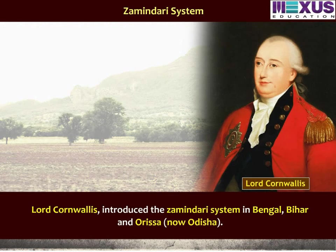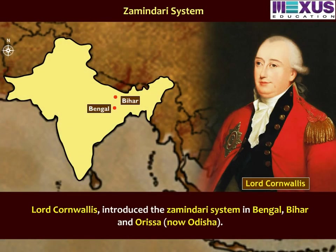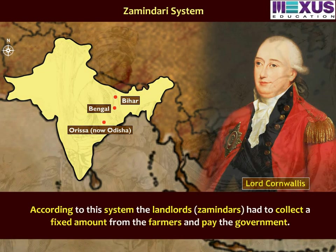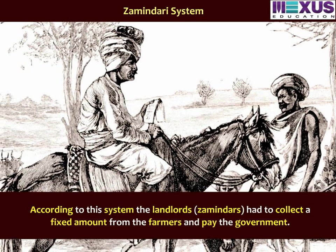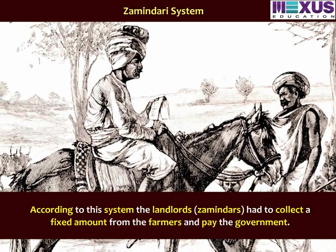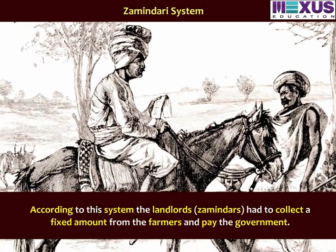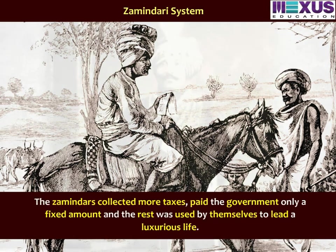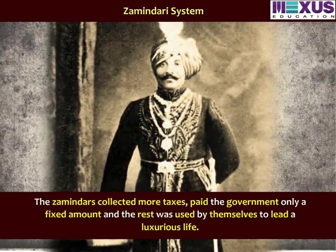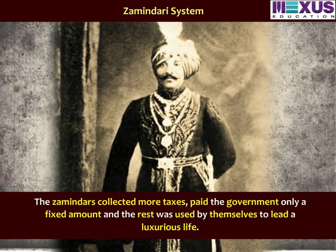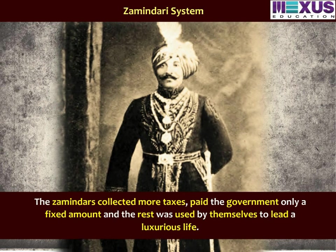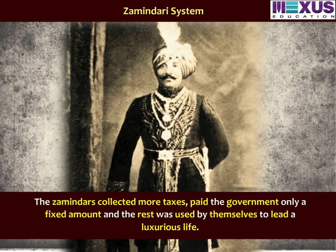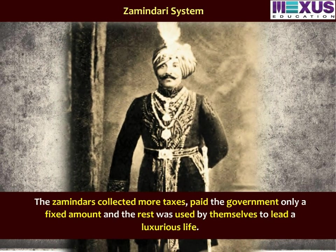Lord Cornwallis introduced the zamindari system in Bengal, Bihar, and Orissa. According to this system, the landlords or zamindars had to collect a fixed amount from the farmers and pay the government. The zamindars collected more taxes, paid the government only a fixed amount, and used the rest for themselves to lead a luxurious life.